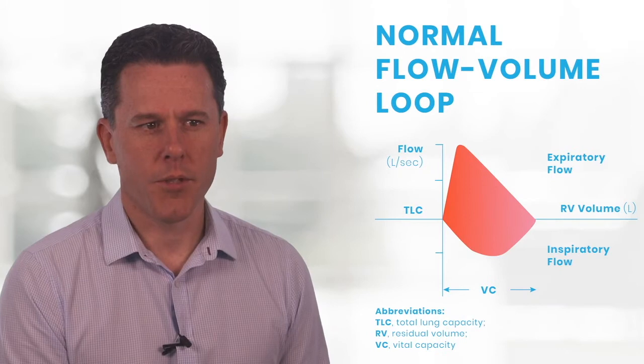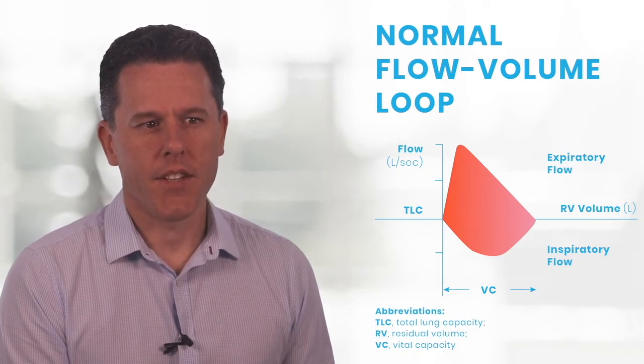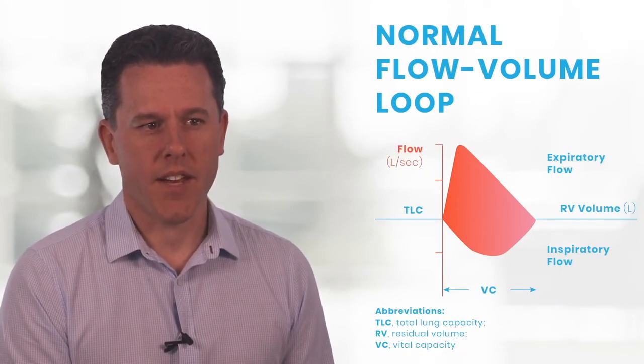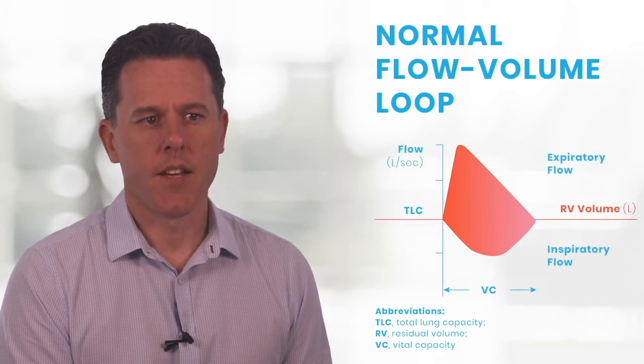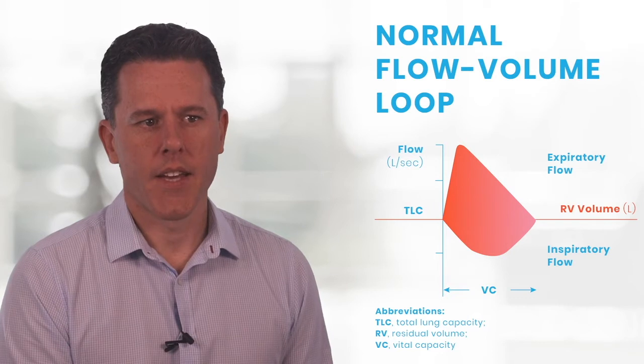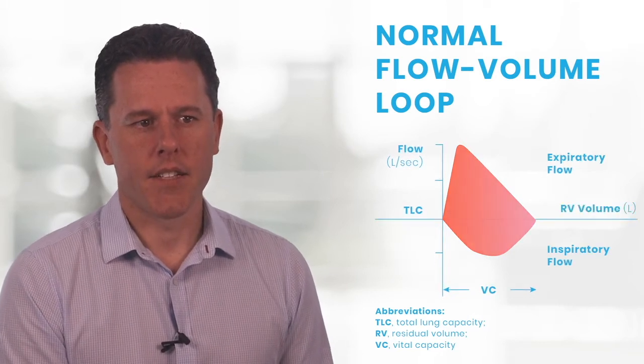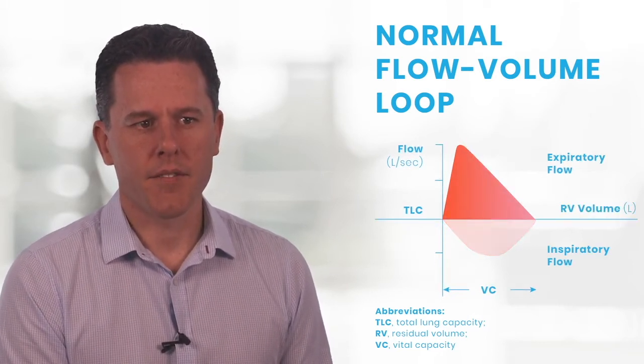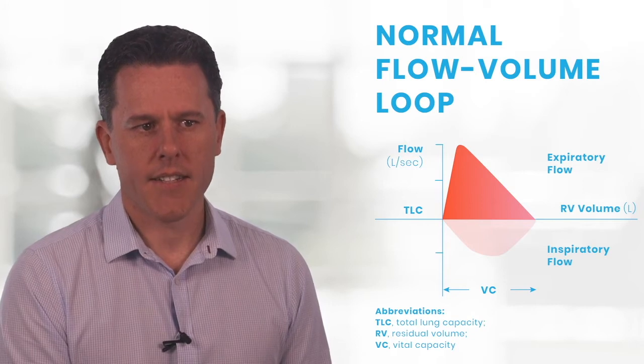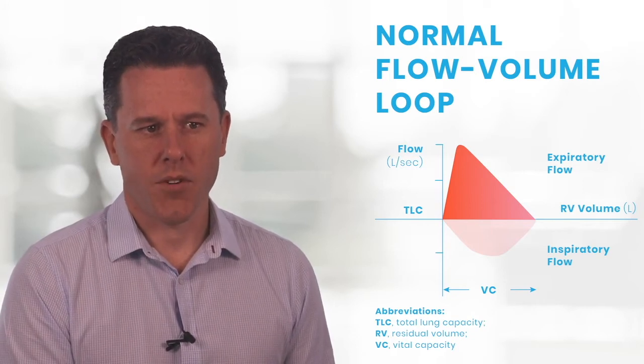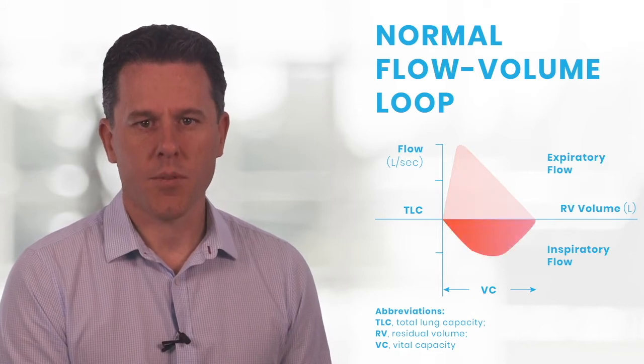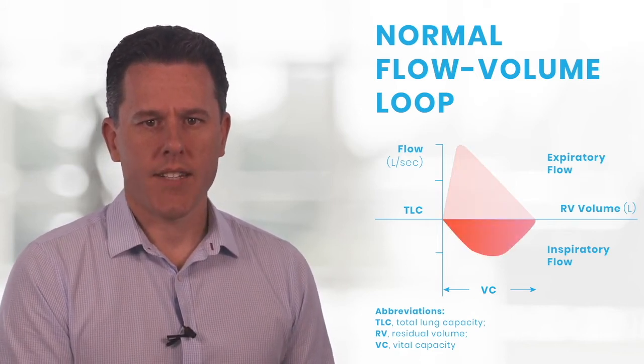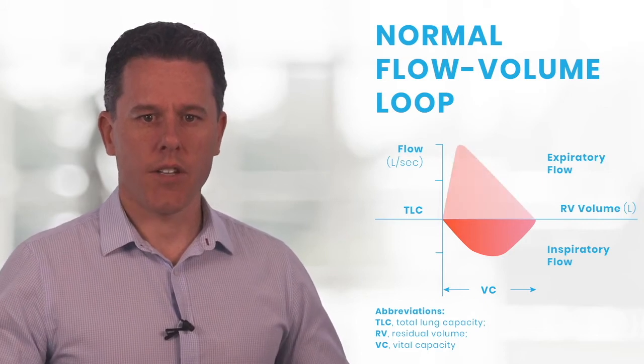Here we have an example of a flow-volume loop. On the y or vertical axis we have flow, and on the x axis or horizontal axis we have volume. As the line goes above the horizontal axis, that is expiration, and below the horizontal axis is inspiration. So if we start with a total lung capacity...